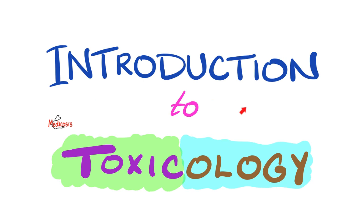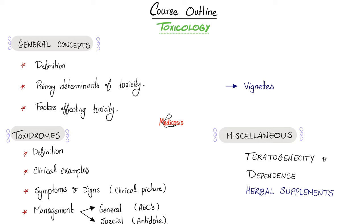Introduction to toxicology — the study of toxins. For example, if a patient with congestive heart failure took too much digoxin and suffered side effects: what are the symptoms and signs? How do we manage this case? There is general management and special management. In emergency medicine, you always start with ABCs: airway, breathing, and circulation. Then there is special management — the antidote, if one exists for that specific medication. For digoxin toxicity, please comment below with the name of the antidote.